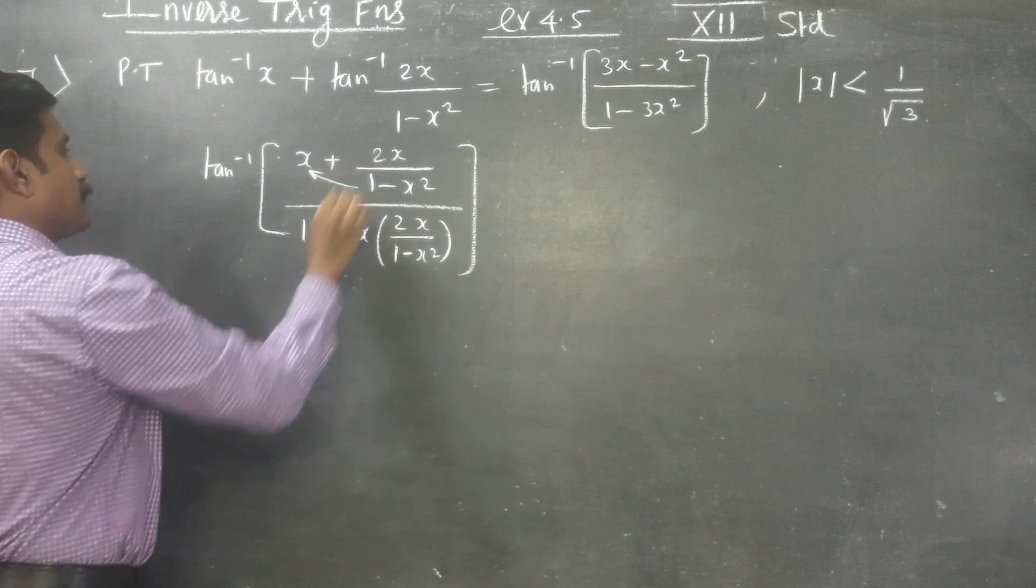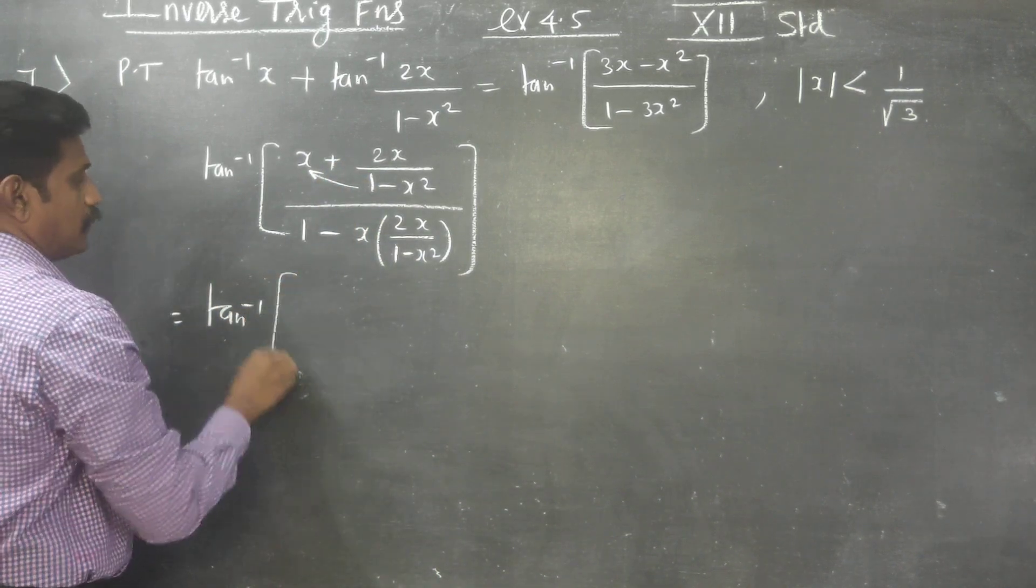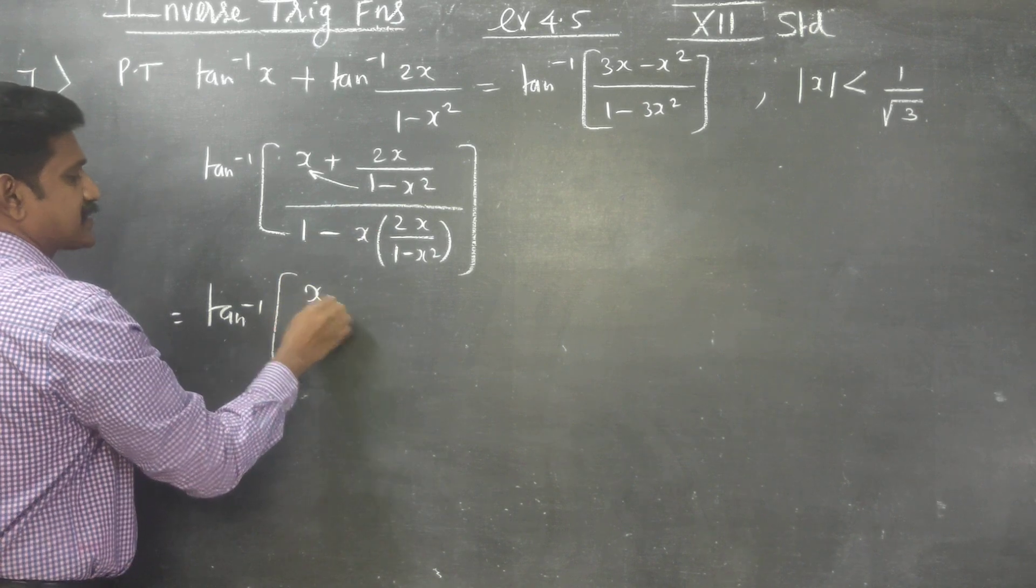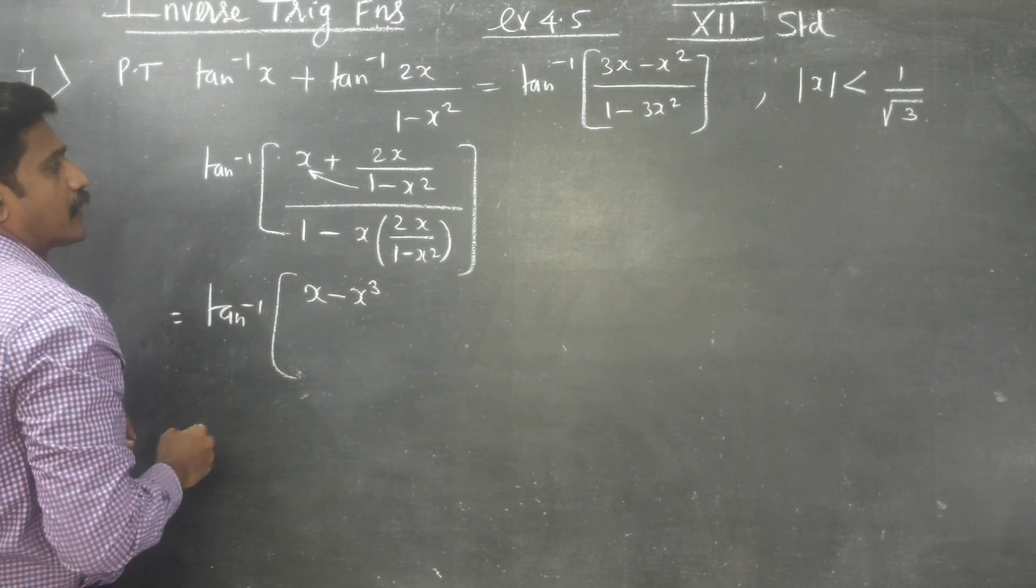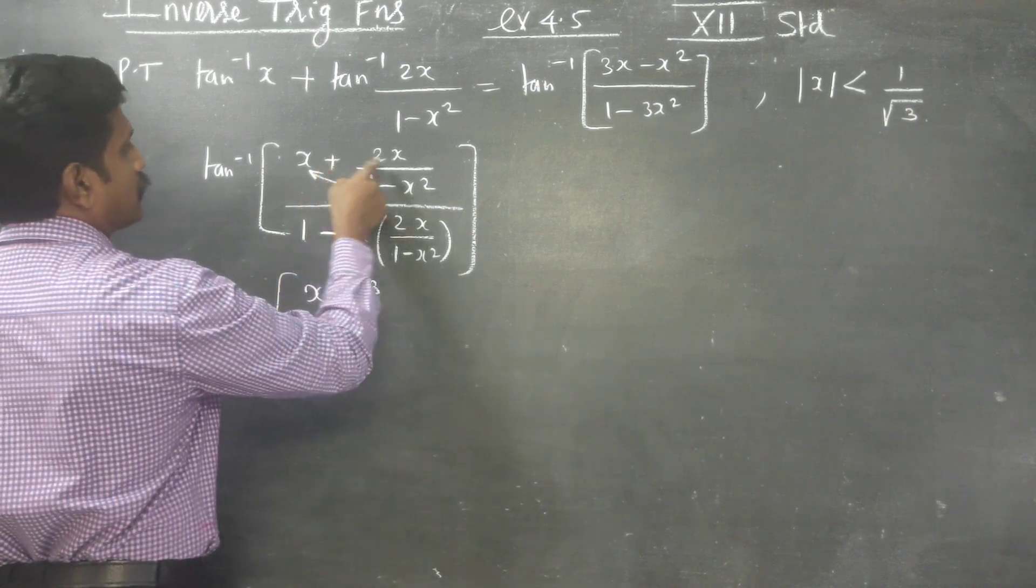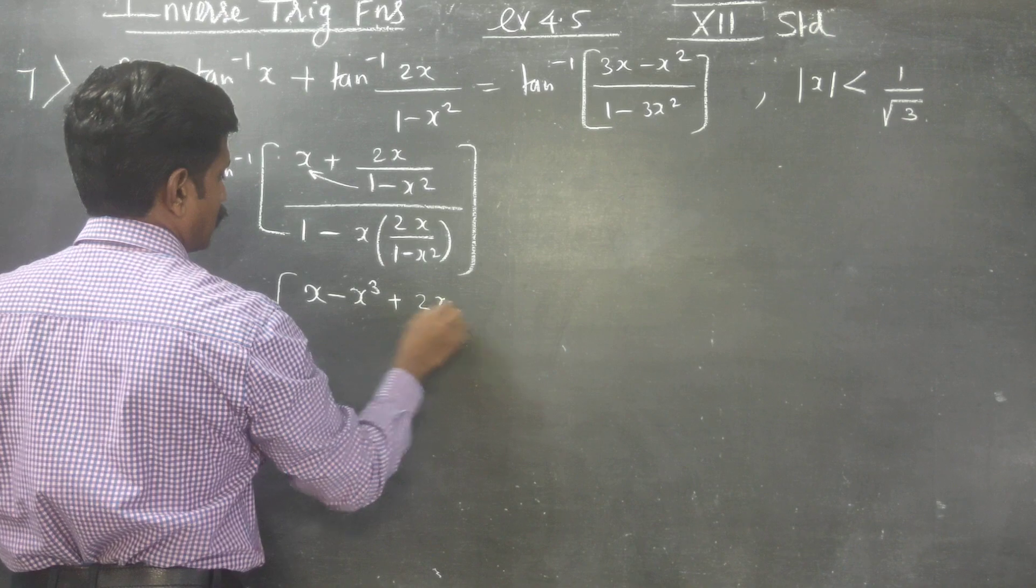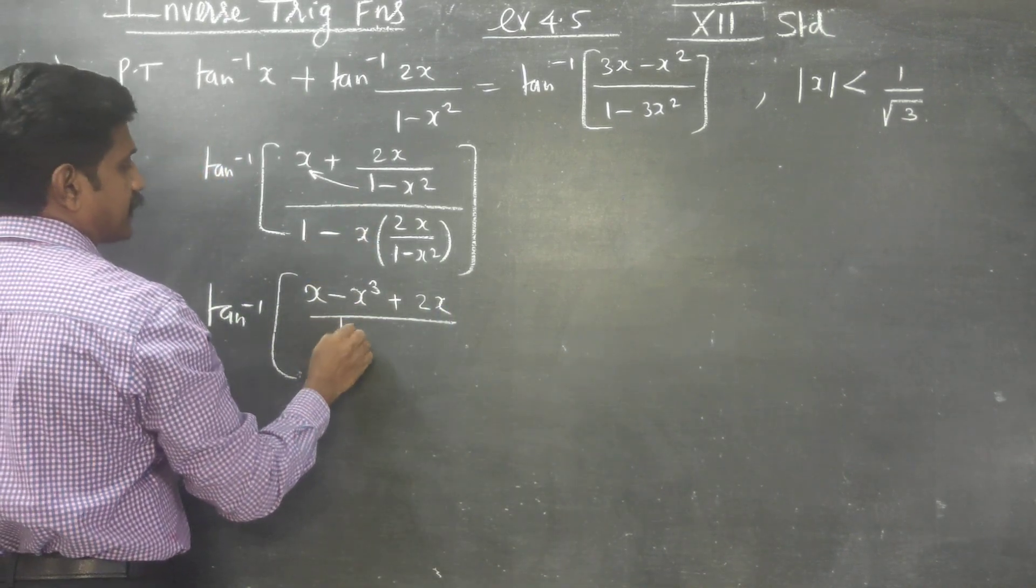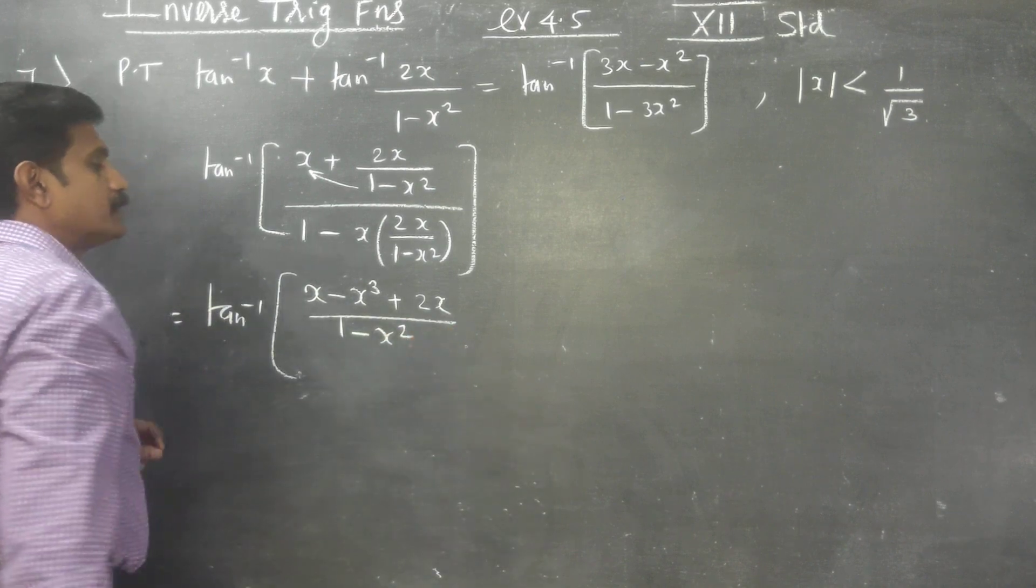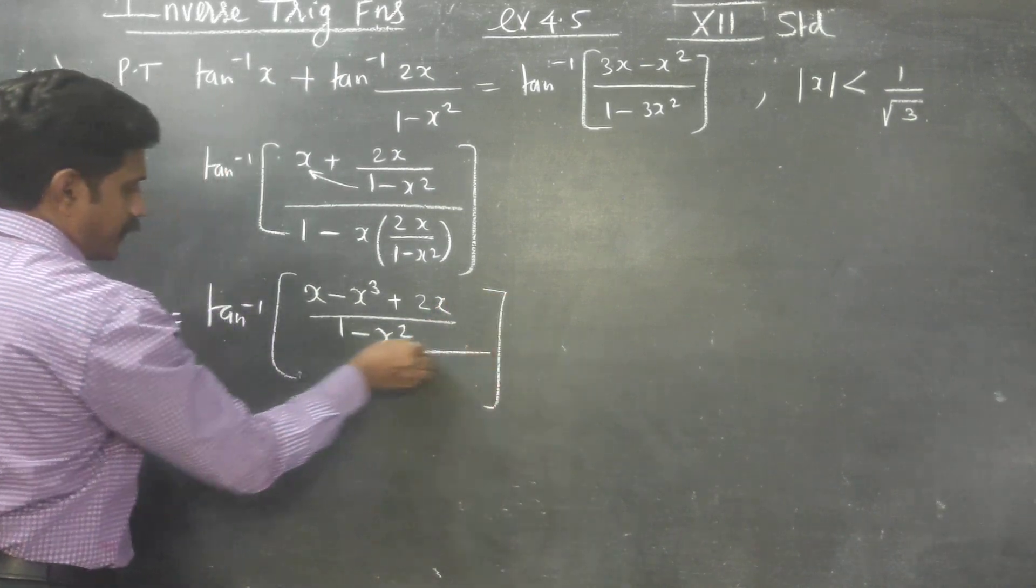Am I right? Again cross multiply, tan inverse of 1 into x is x, minus x into x square is x cube, then plus 2x divided by 1 minus x square. Am I right? 1 minus x square, numerator is over.